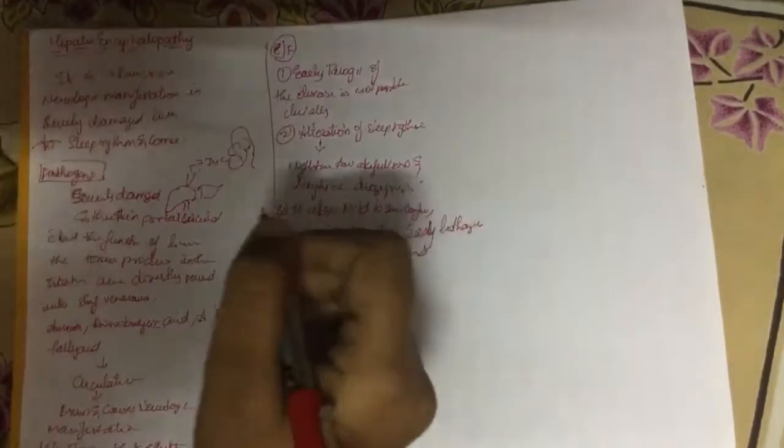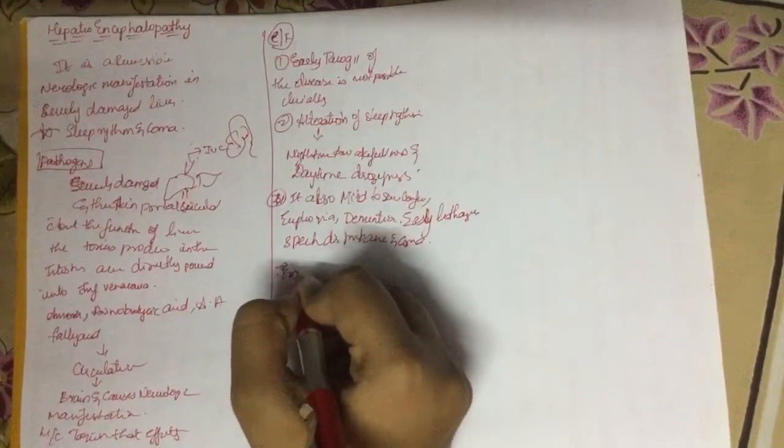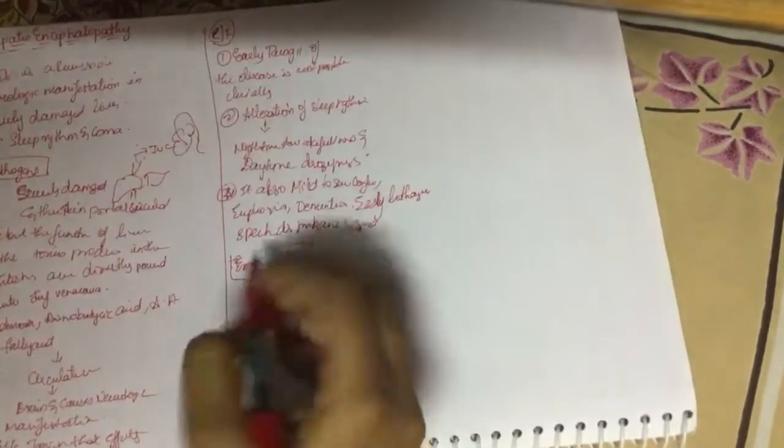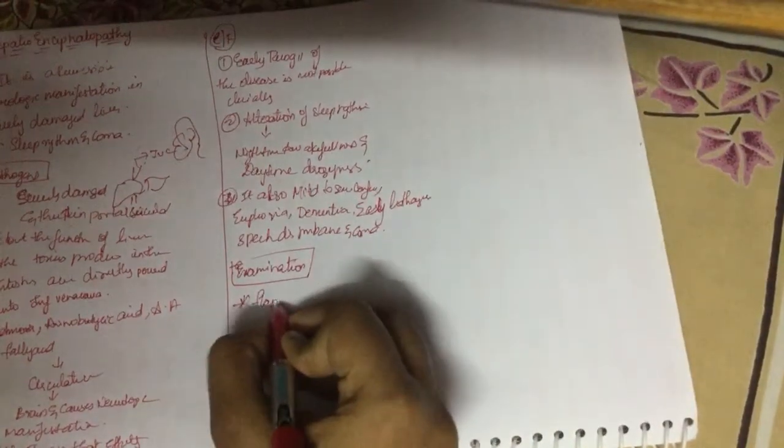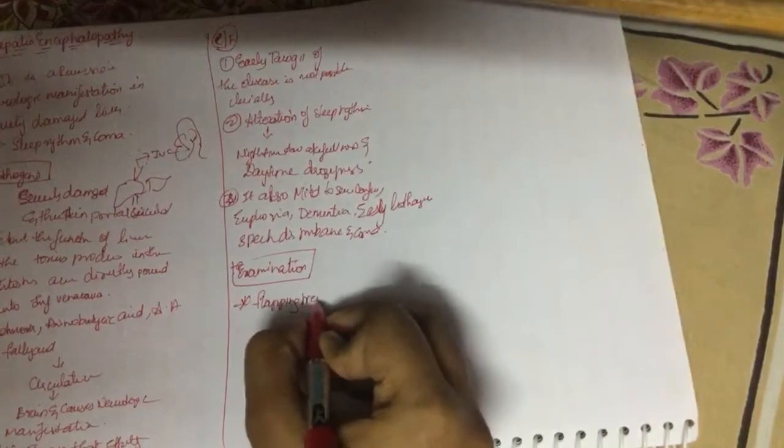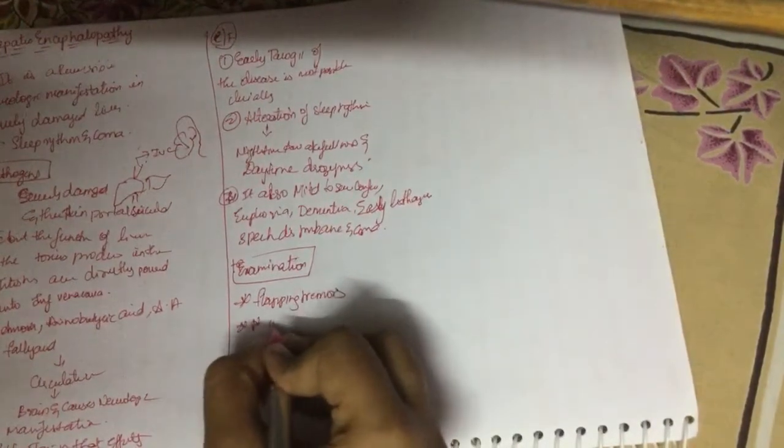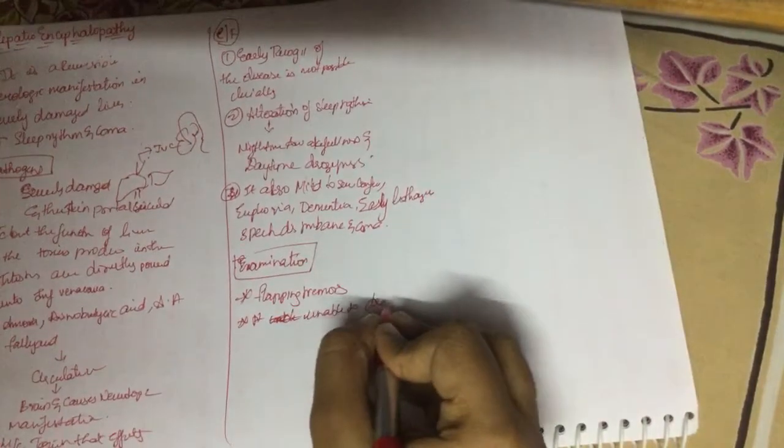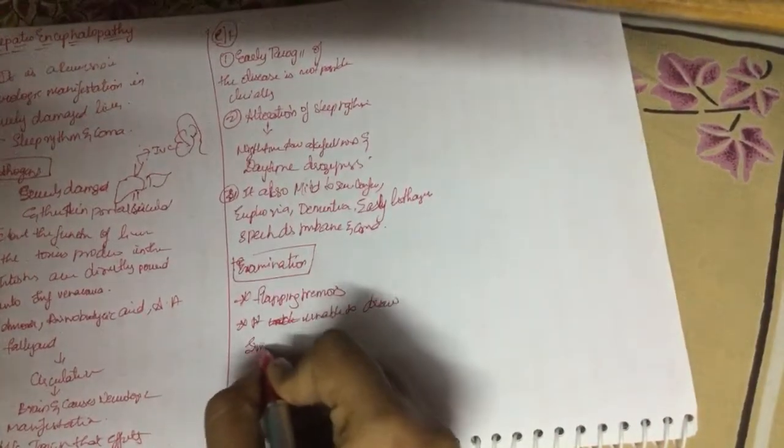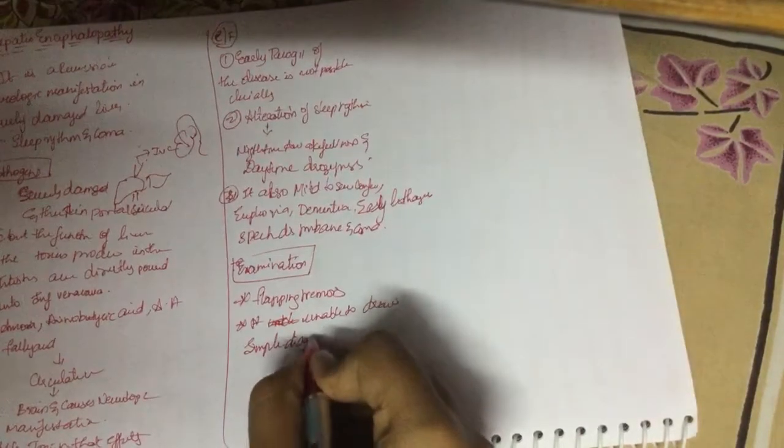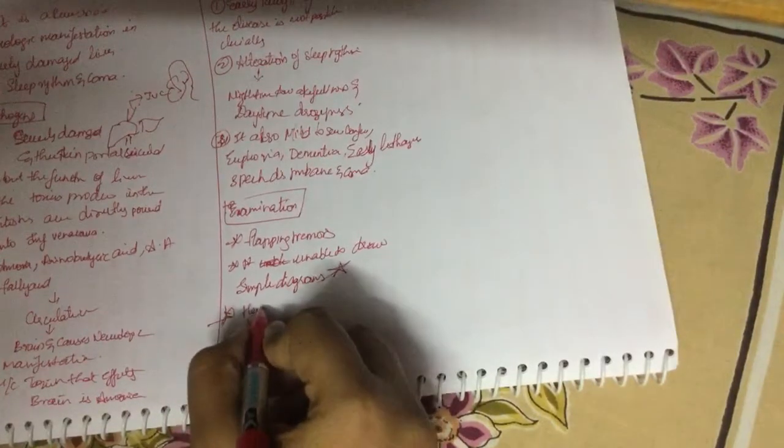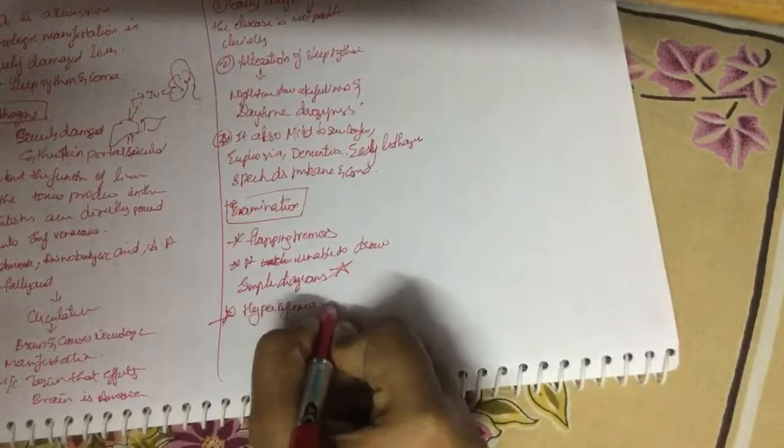On examination, we can see that there are flapping tremors. Patient is unable to draw simple diagrams such as a star. The condition is hyperreflexia, which can be observed in patients.